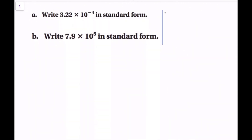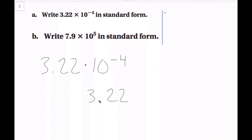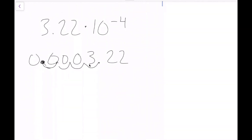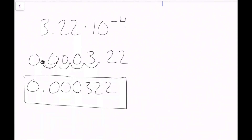For part A, write 3.22 × 10⁻⁴ in standard form. The first thing we ask ourselves: is this number really big or really small? Since we have a negative exponent, it's going to be really small. So I'm going to rewrite 3.22 and move the decimal point to the left 4 spaces: 1, 2, 3, and 4. Fill in the empty spots with zeros as placeholders: 0, 0, 0, and a zero to the left of the decimal. Rewriting this in standard form, we get 0.000322.